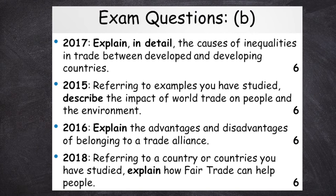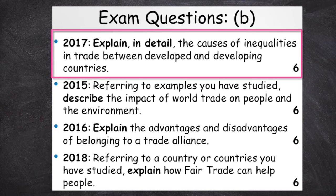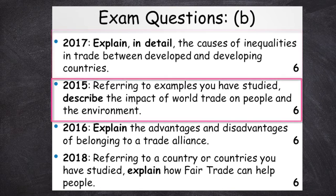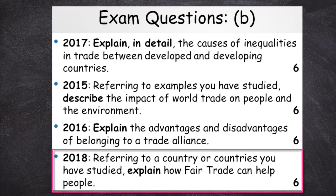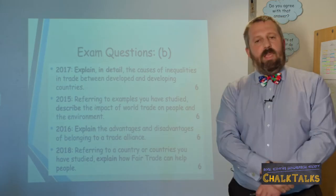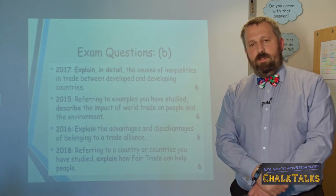For Part B, you could be presented with a question that asks you to explain the causes of inequalities in trade, as was the case in 2017. You could be asked to describe the impacts of inequalities in world trade on people and the environment, as was the case in 2015. Or you could be asked to explain some of the strategies to reduce the inequalities in world trade — whether that's explaining the advantages and disadvantages of belonging to trade alliances, as was the case in 2016, or explaining the benefits of the fair trade system, as was the case in 2018. I'm going to go through some of the key points for each of these four questions in turn over the next four slides.